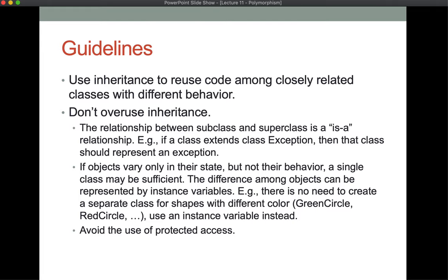Another time people tend to abuse inheritance is when two objects really only differ in the values of their instance variables, meaning they differ in their state. When that happens, those are really two objects of the same class — we shouldn't have two separate classes to describe each of them. We also need to avoid the use of protected. You almost never need a protected instance variable. Protected really only applies to methods and constructors, usually only in situations where we're developing frameworks.